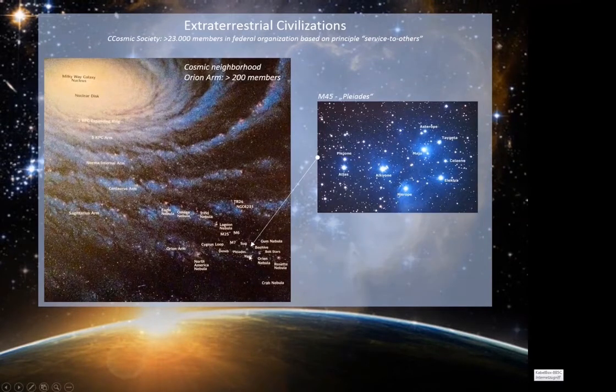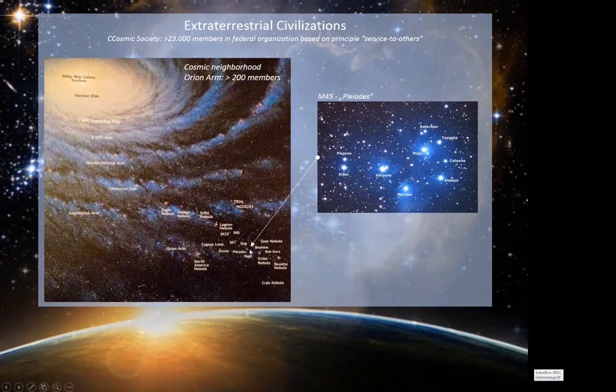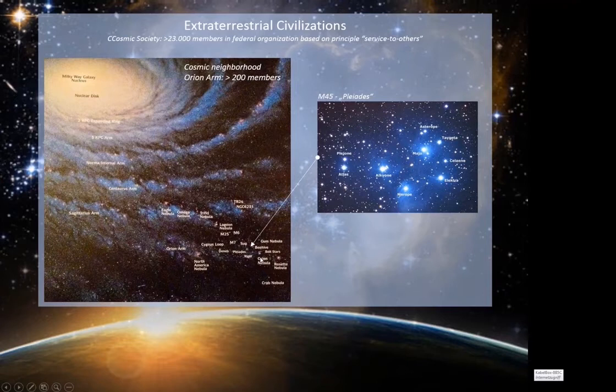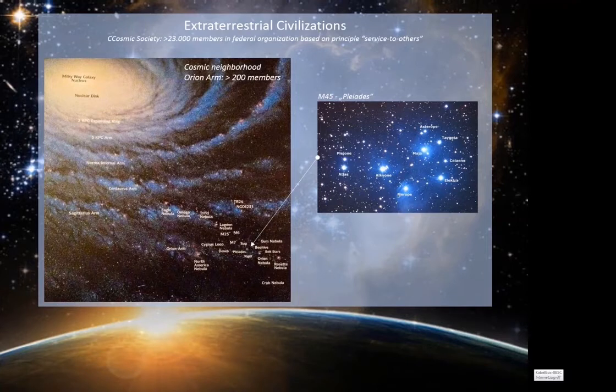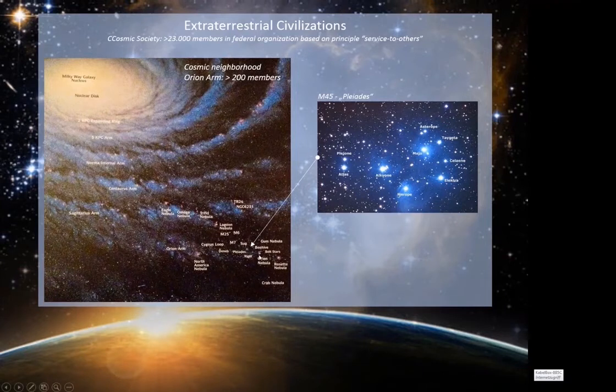That is very important if we come to the next two slides, because we have on the other side here another view to the Orion Arm. We see our Sun, and here is an arrow showing the M45 star cluster called Pleiades. If you look to that location, also the Pleiades are very, very close to us, to our solar system. And here again, the Orion Nebula. If you make a circle around that area, you can recognize that many of our extraterrestrial contacts we might already have are in the Pleiades. We see here that we are really neighbors.